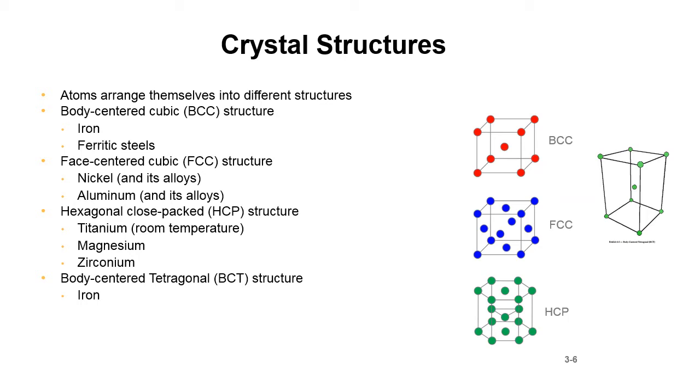Body centered cubic BCC structure is iron and ferritic steels. Face centered cubic is the FCC structure, it's the blue guy over here on the right. That's nickel and its alloys and aluminum and its alloys. Hexagonal close pack structure is titanium at room temperature, magnesium, and zirconium. Body centered tetragonal is iron after it's been quenched, so that's martensite. This gets to be important later on when we start talking about quenching and cooling of iron from a high temperature down to room temperature.